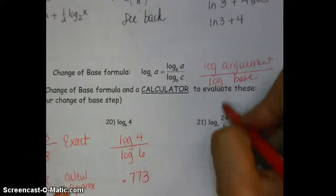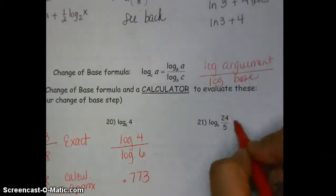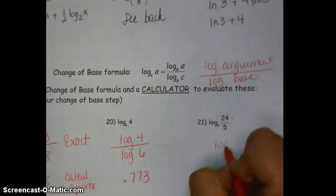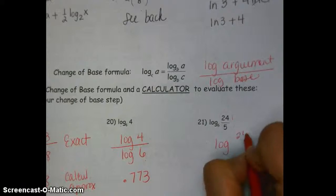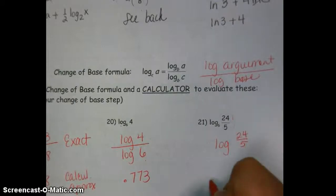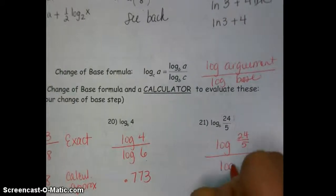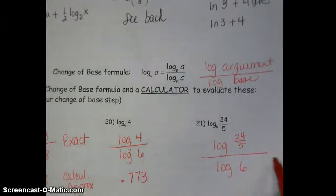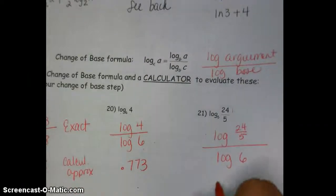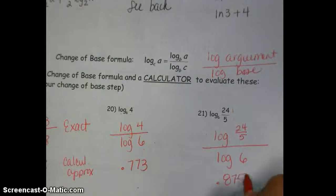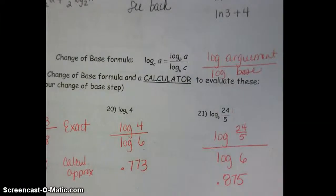And for the last one, even though my argument is a fraction, this is still on the numerator. So it would be log 24 divided by 5 enter, right, divided by log base 6. So here's the exact and then if you evaluate with a calculator, it would be 0.875. So here's the exact thing to add.